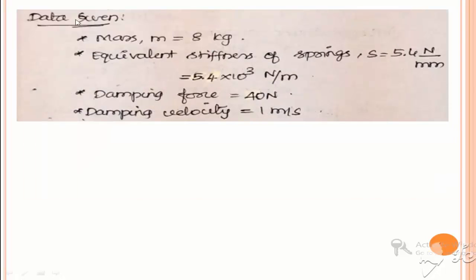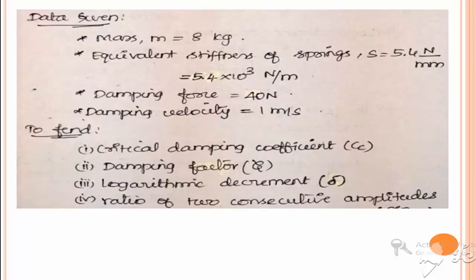The given data are: m = 8 kg; spring stiffness s = 5.4 × 10³ N/m (converted to SI units); damping force = 40 N; damping velocity = 1 m/s. We are asked to find the critical damping coefficient cc, damping factor zeta (also known as damping ratio, which is the ratio between damping coefficient and critical damping coefficient), logarithmic decrement, and ratio of two consecutive amplitudes.